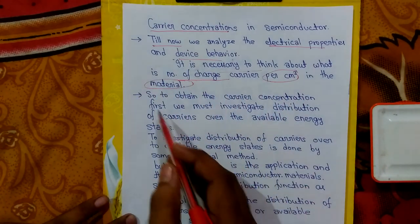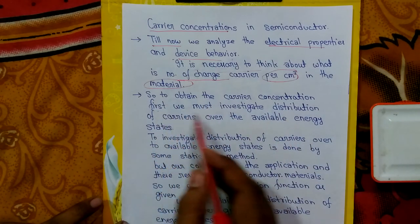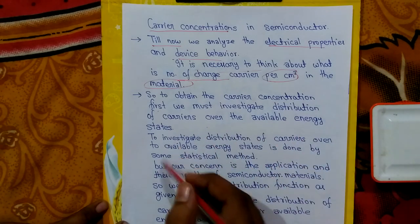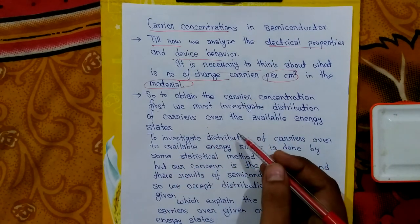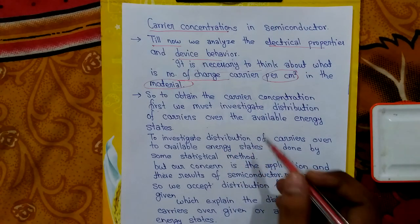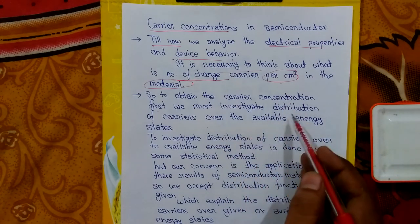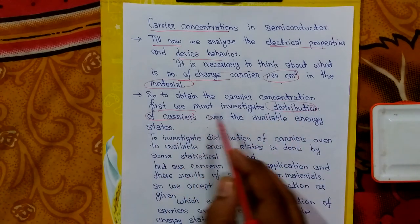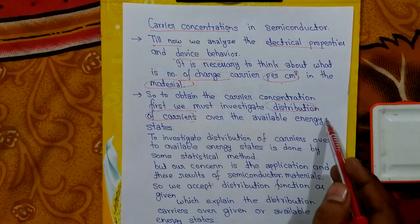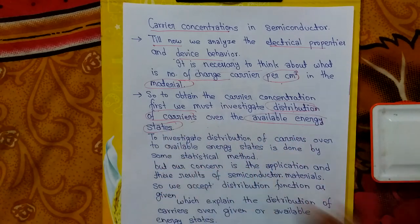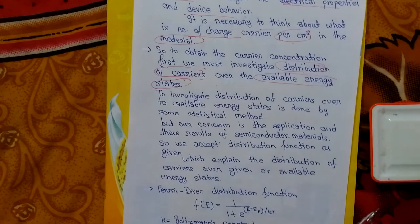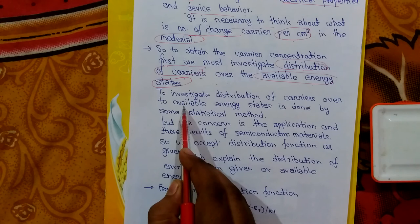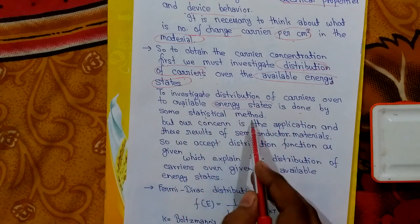To obtain the carrier concentration, we must first investigate the distribution of carriers over the available energy states. Before finding the amount of charge carriers per centimeter cube, we have to know what is the distribution of carriers and how they are distributed in the given available energy states. This investigation of carrier distribution over a given energy state is done by statistical methods.